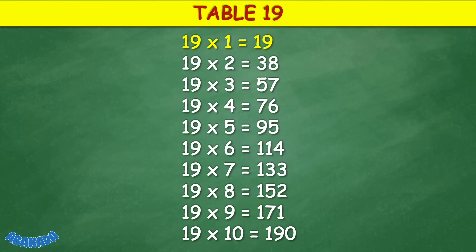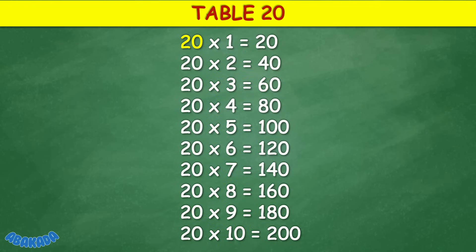Table 19: 19 times 1 equals 19, 19 times 2 equals 38, 19 times 3 equals 57, 19 times 4 equals 76, 19 times 5 equals 95, 19 times 6 equals 114, 19 times 7 equals 133, 19 times 8 equals 152, 19 times 9 equals 171, 19 times 10 equals 190.